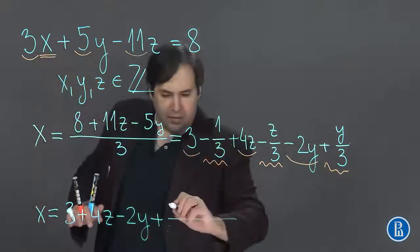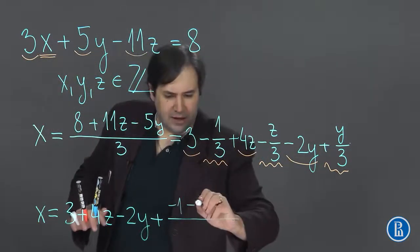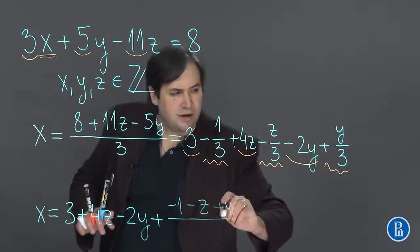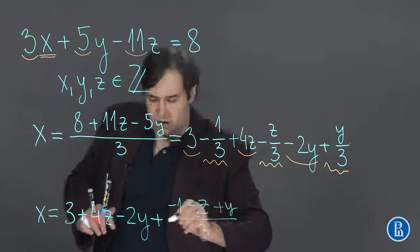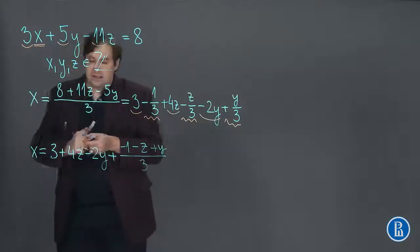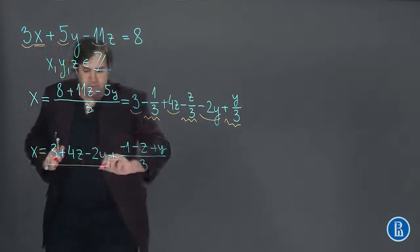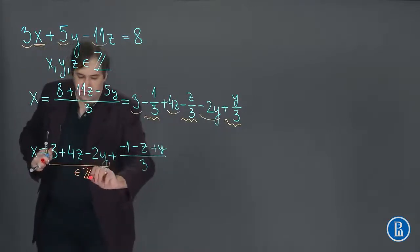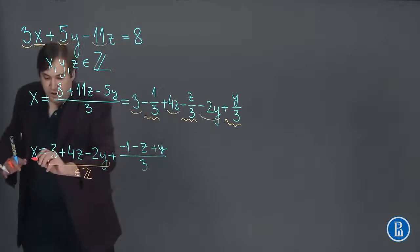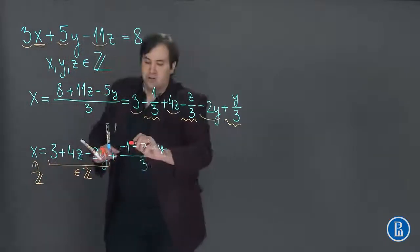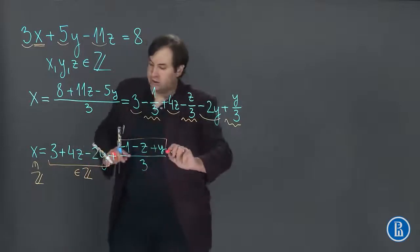Minus 1 minus 1 minus z plus y over 3. Since this is an integer and x is also an integer, this fraction over here must also be an integer.